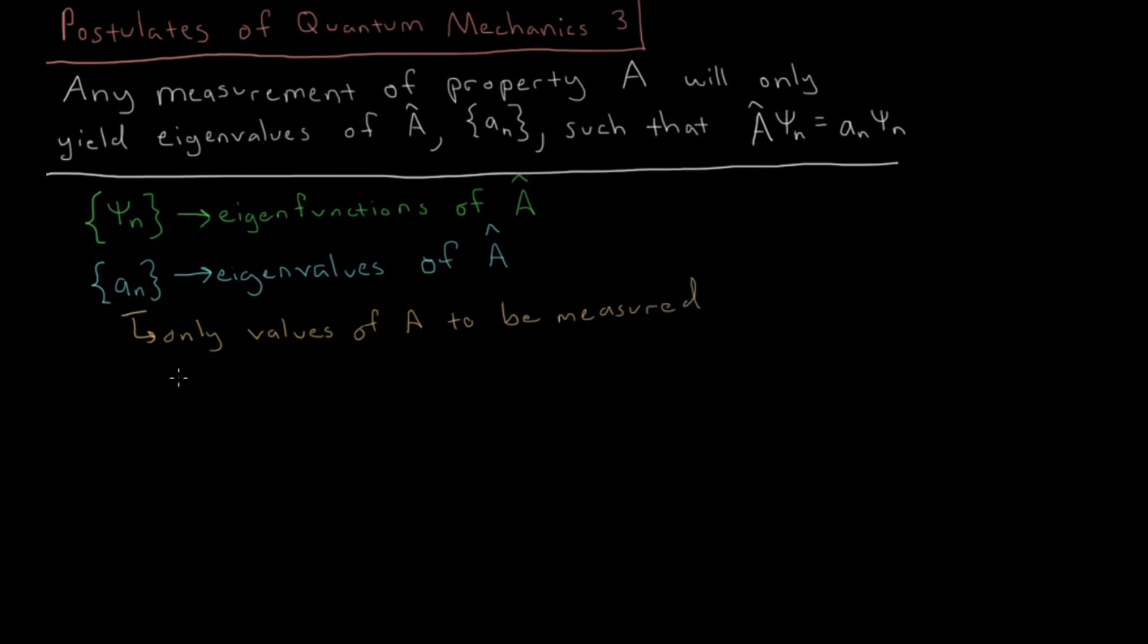Now, this is pretty straightforward. If we have our total wave function, psi, and it just equals one of these eigenfunctions, then it's rather straightforward. We're going to measure a sub n for that specific eigenstate, and that's going to be the only possible value that you can measure.